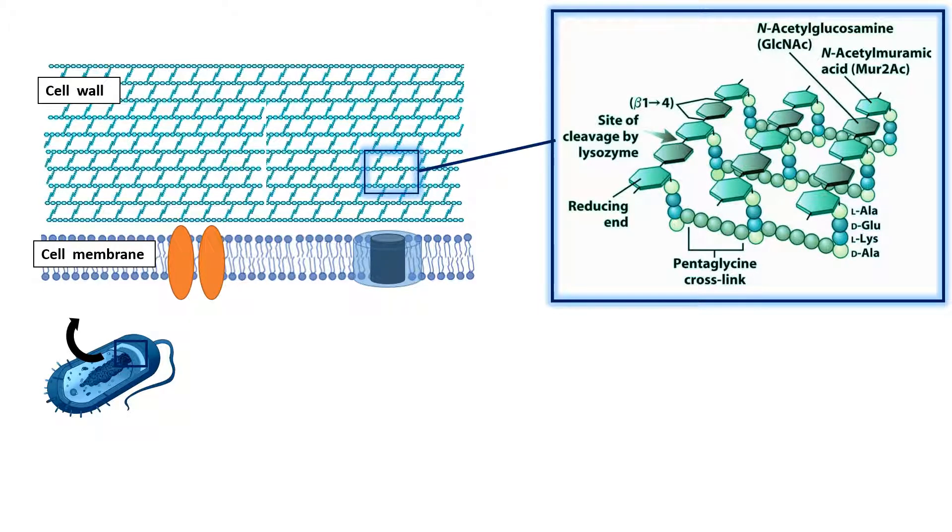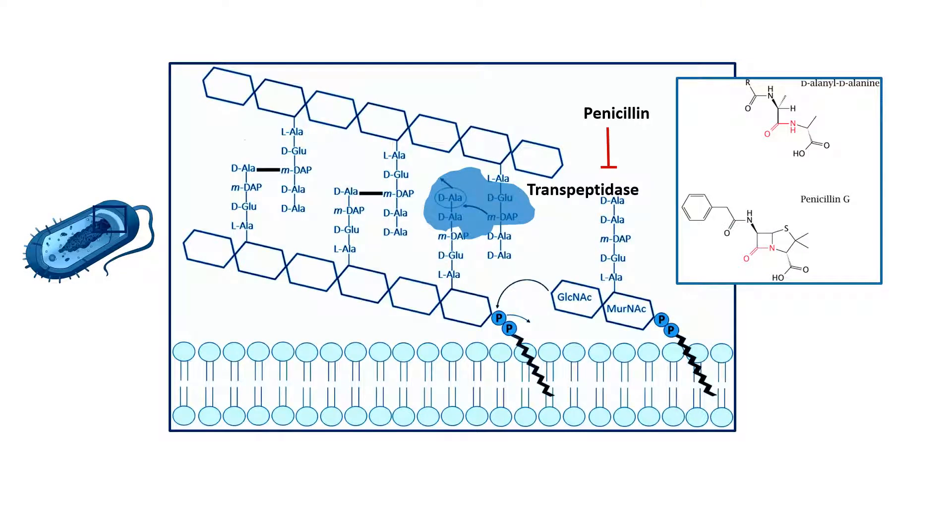The cell wall is formed of a polymer of N-acetyl glucosamine and N-acetyl muramic acid. The polymers are interlinked by a pentapeptide bridge, and inside the pentapeptide bridge, a peptide bond is formed between meso-diaminopimelic acid and D-alanine.